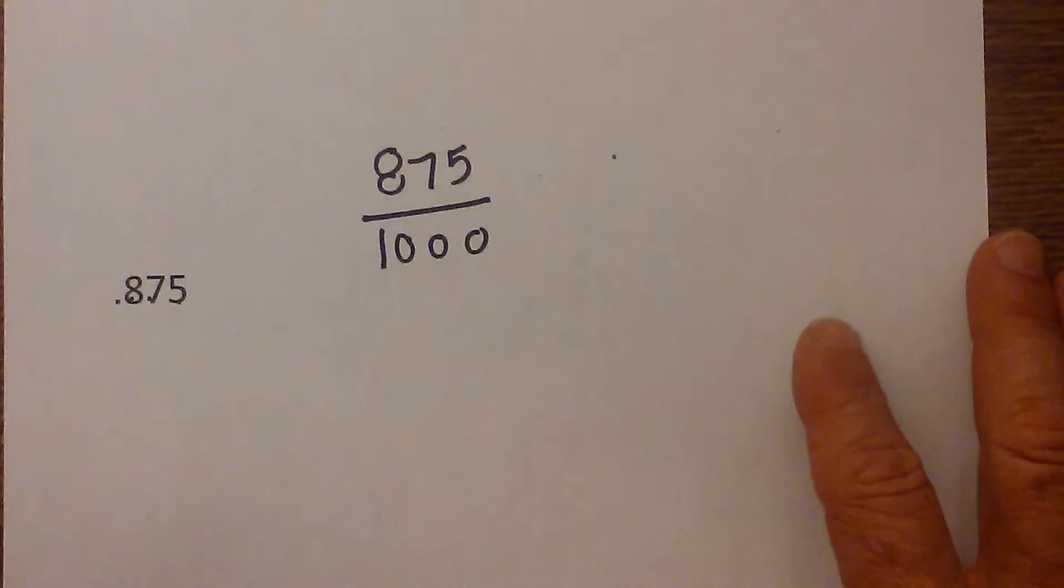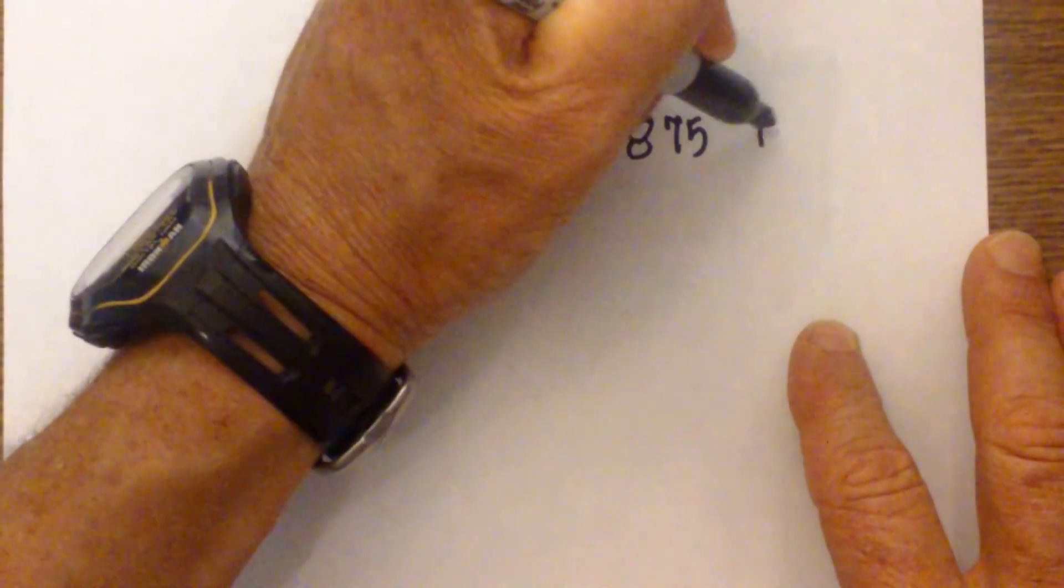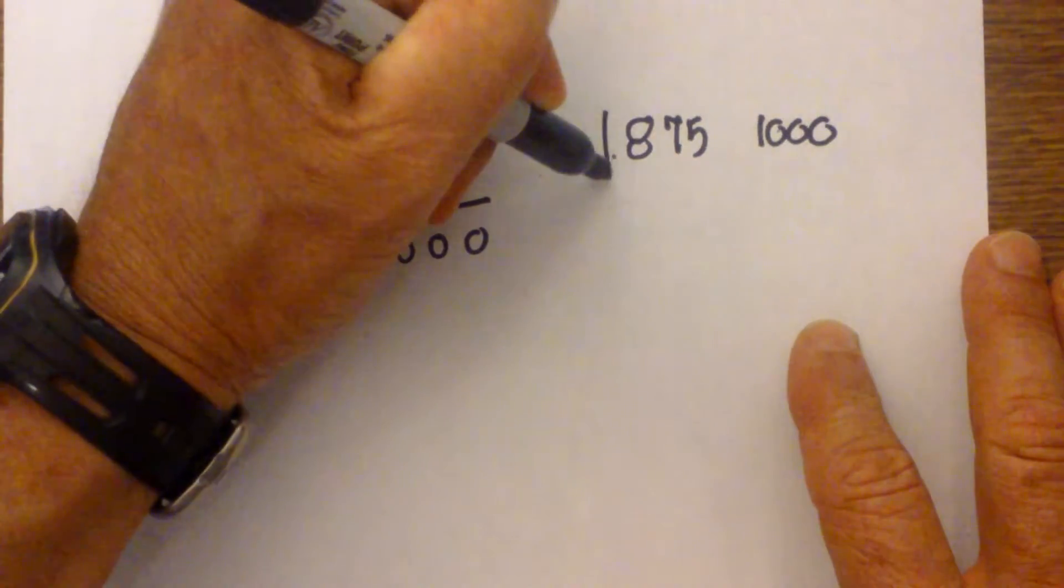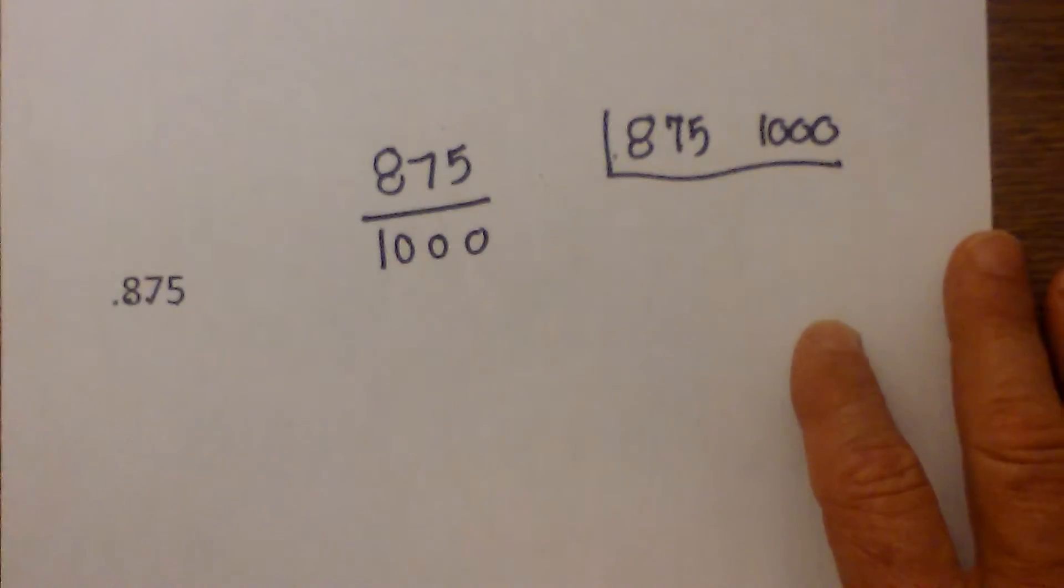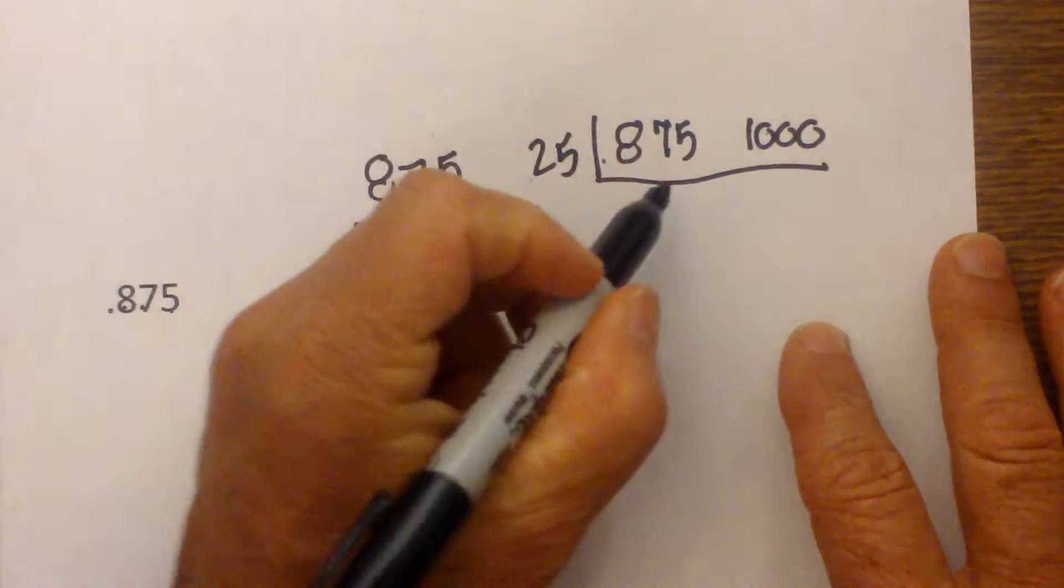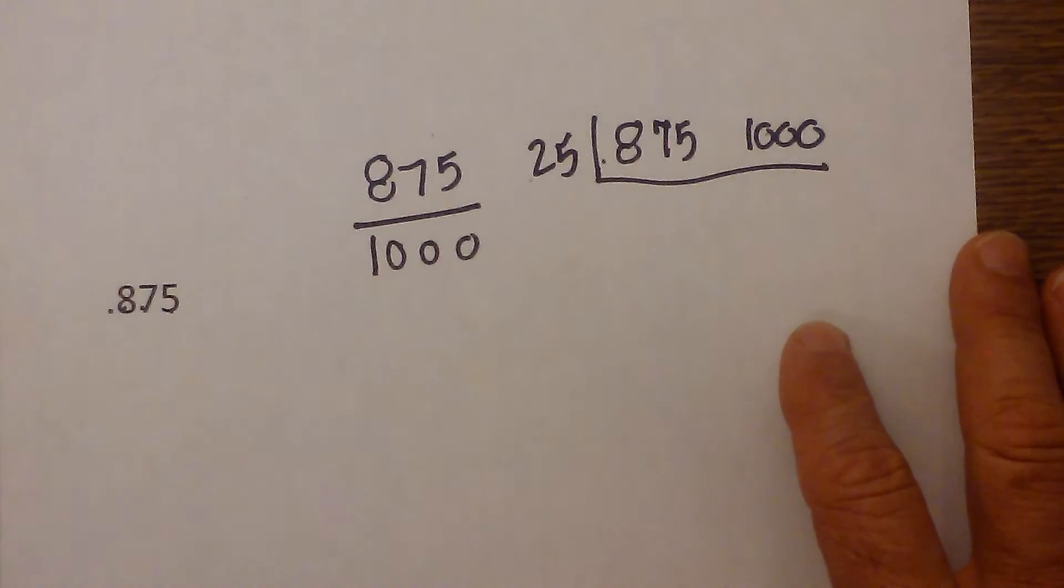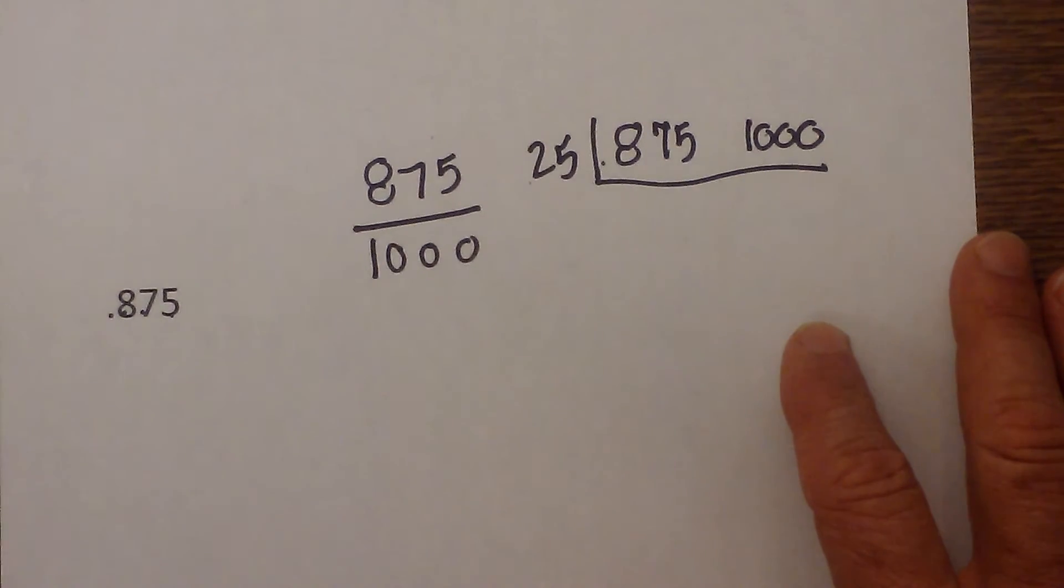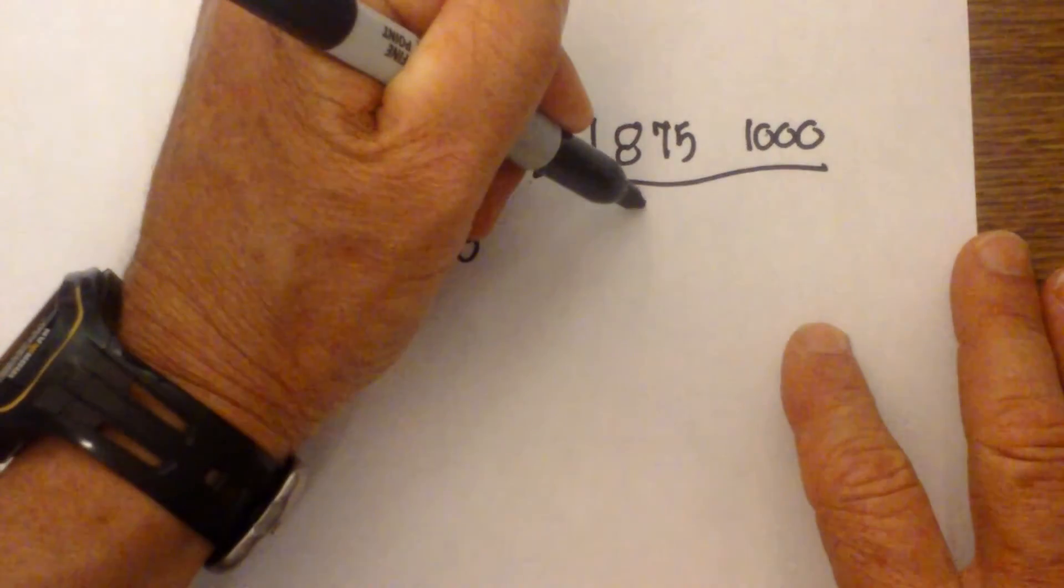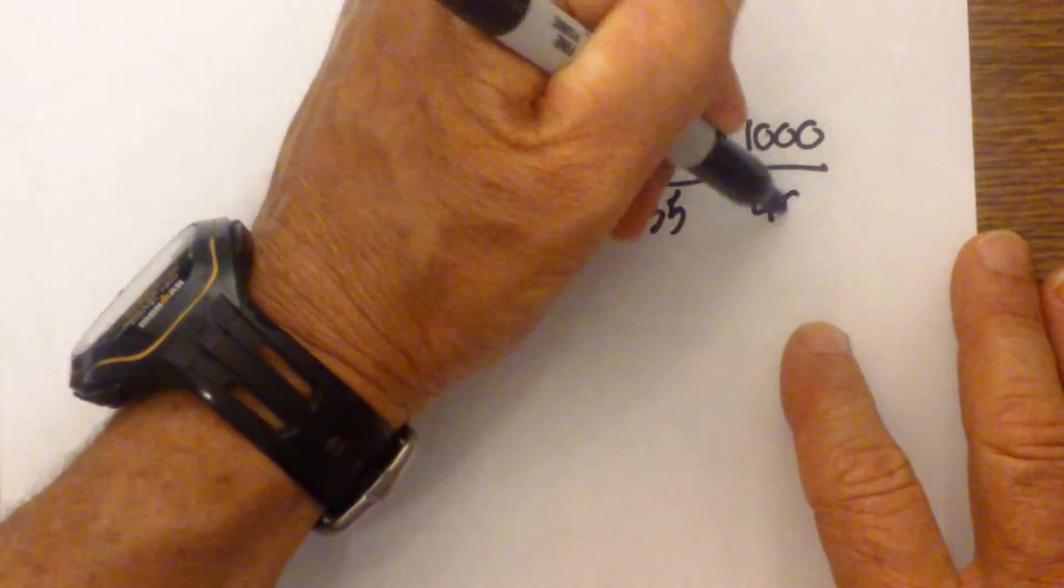I then write 875 and 1000 under a line. I then divide it by 25 because I know 75 and 100, I know this is divisible by 25. 25 will go into 875. Let me double check that with my trusty calculator. 35 times, and 25 goes into 100 forty times.